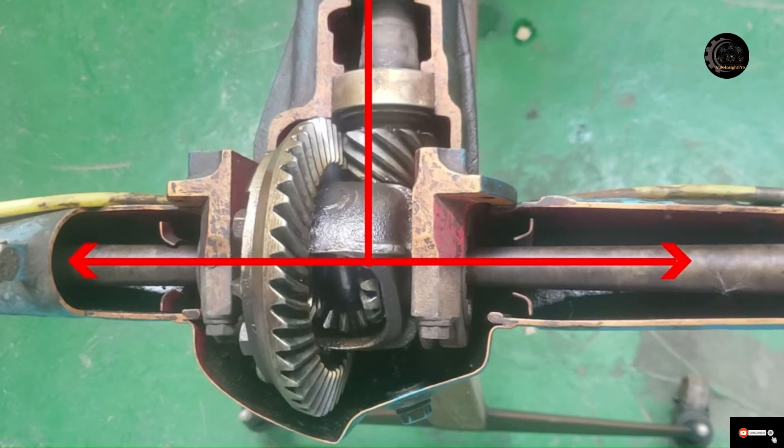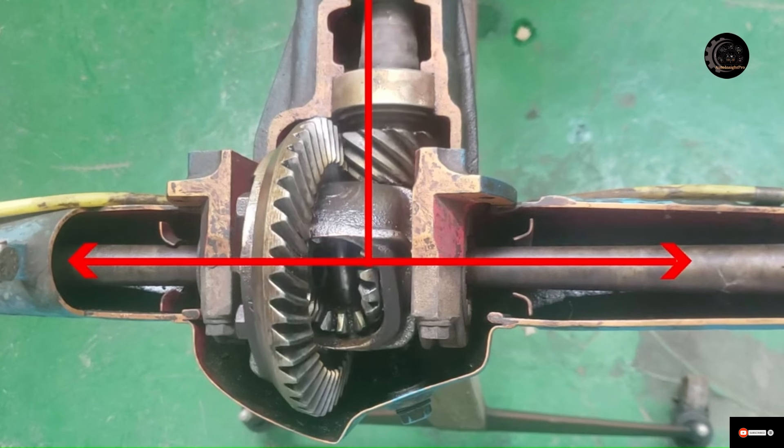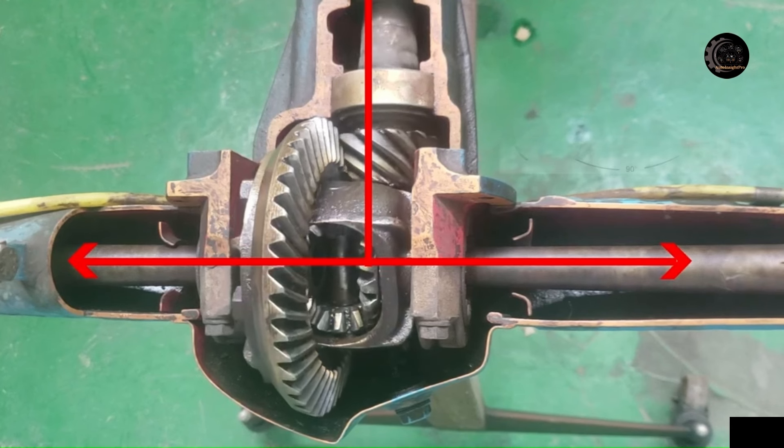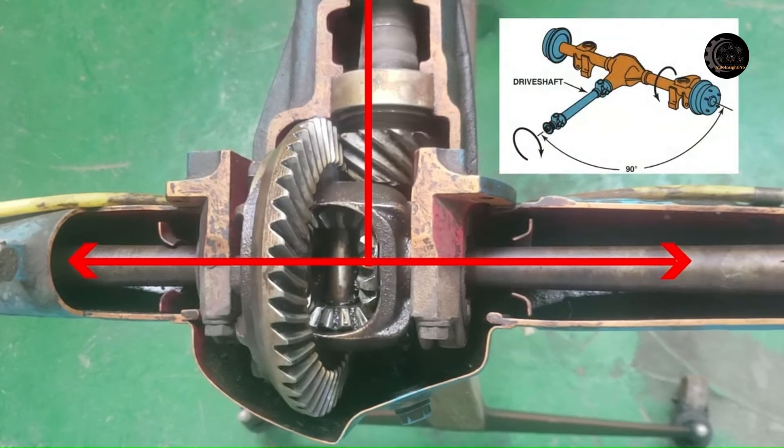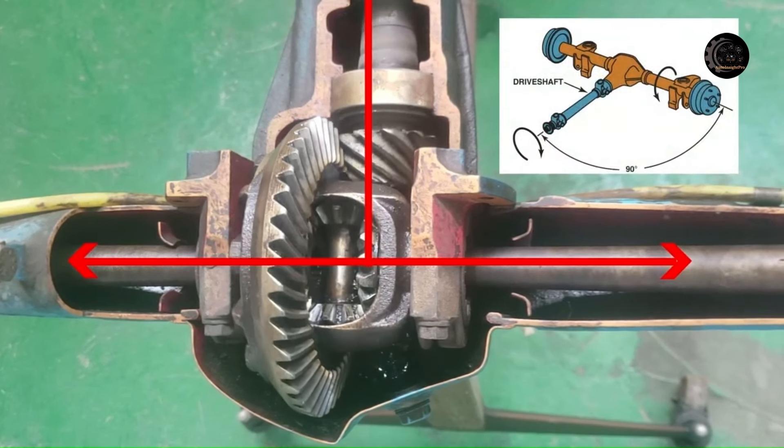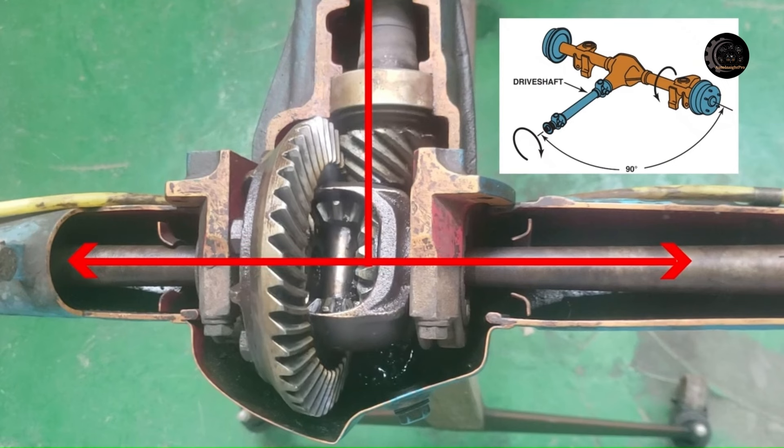The differential was founded in 1827 by a Frenchman. First used in steam-driven vehicles, the differential became a standard component of vehicles with internal combustion engines since then.